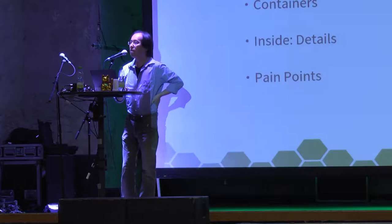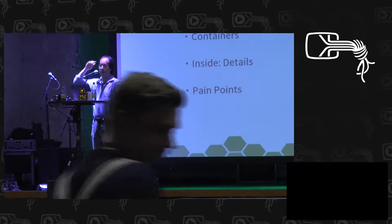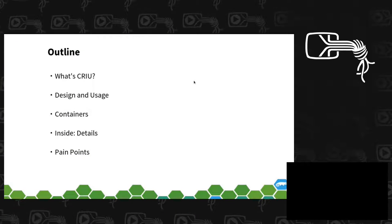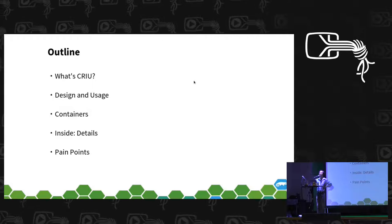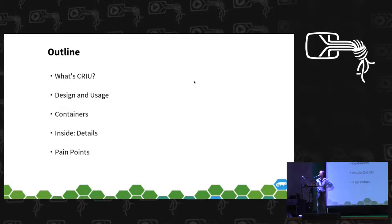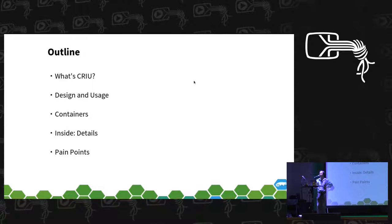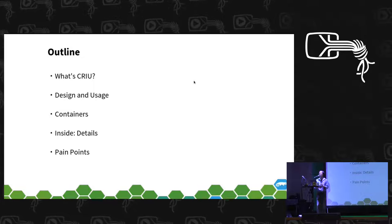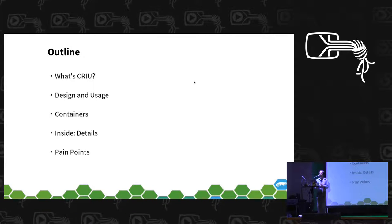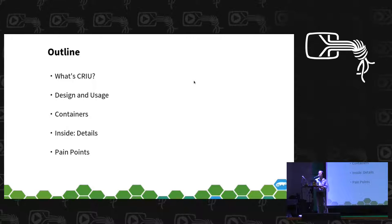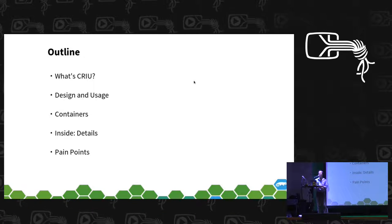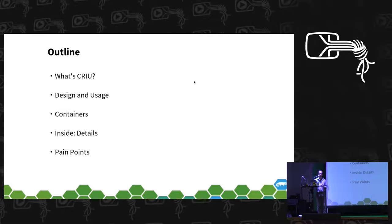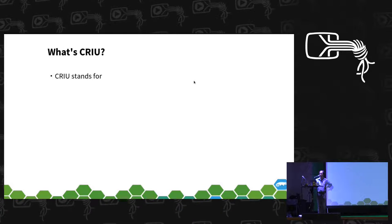This is an outline of this presentation. At first, I will give you a brief introduction — what's CRIU? Then I will cover the basic design and how to use CRIU, and how CRIU is adopted by containers. Then we will go deep inside the implementation details of CRIU, and then discuss some current problems.